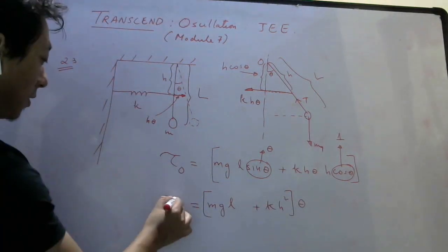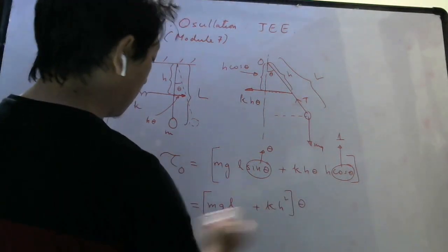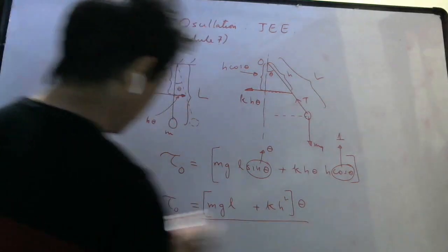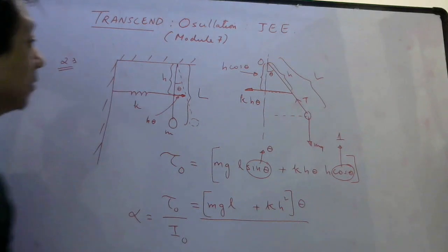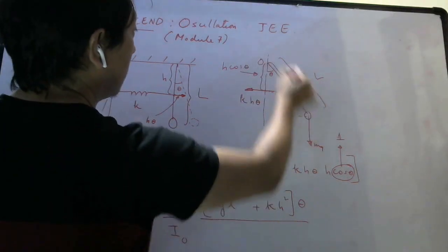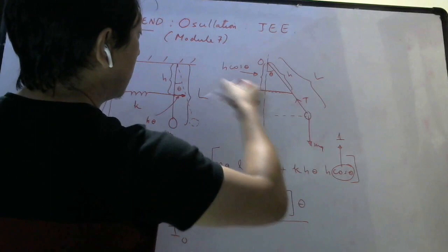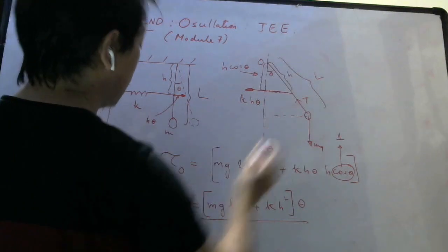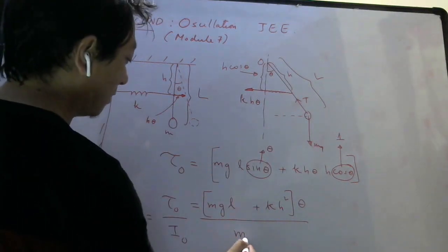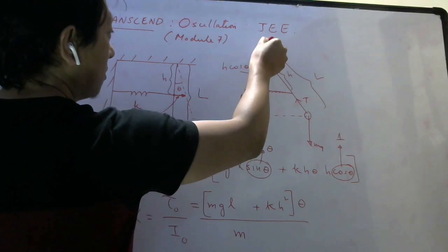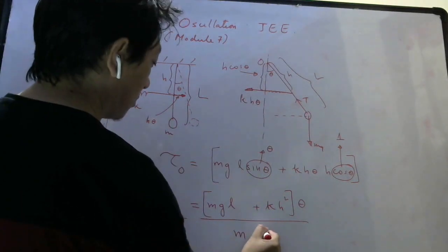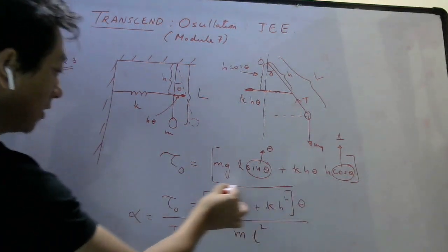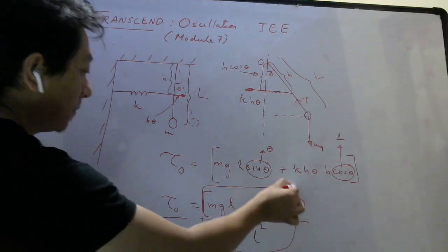If that is your torque, then alpha will be torque divided by moment of inertia. Let me divide by moment of inertia here itself. It will be your alpha. Now, moment of inertia, the only object which has mass is the ball and it is rotating like this. Moment of inertia about this end will be, for a single particle, it is mass times distance squared. Distance of the particle from this axis of rotation is L, so it will be ML squared.